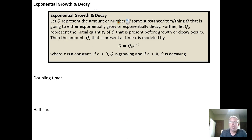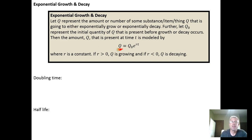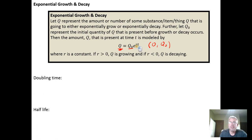The radioactive decay comes from the exponential growth and decay model. The exponential growth and decay model looks like this: if you have some quantity Q of anything — a radioactive element, a colony of bacteria, anything that's going to either grow or decay in size exponentially — the amount Q can be modeled by multiplying Q-naught times e to the rate times time. Q-naught is the initial amount at time equals zero. If R is positive, it means you have growth; if R is negative, it means the thing is decaying.